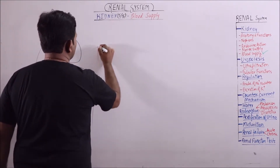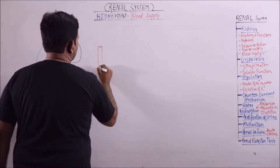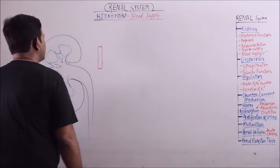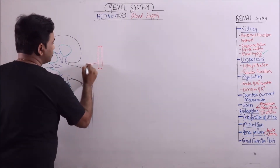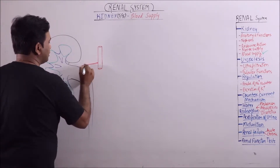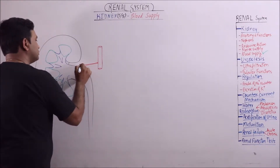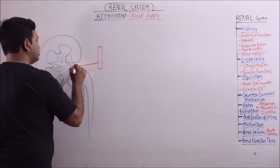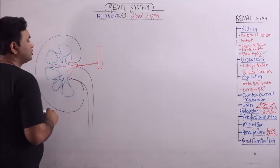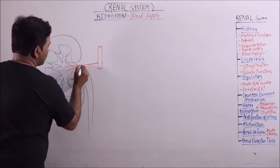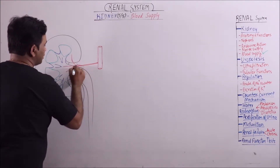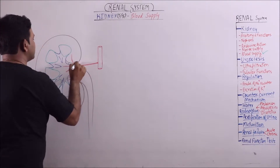This is the dorsal or abdominal aorta. The renal artery branches perpendicularly from it, and near the hilum it divides into a few anterior and posterior branches. These are the anterior branches and this one is the posterior branch.